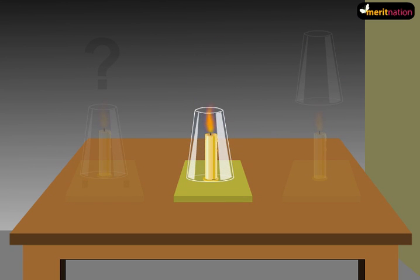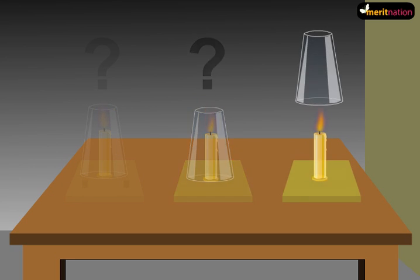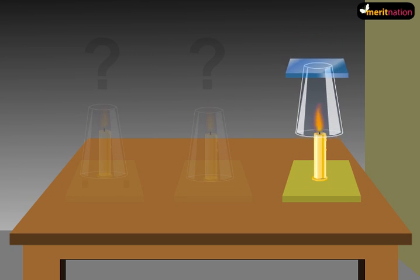Place the glass over the second candle in such a manner that it simply rests on the table. And place a glass plate over the third candle. There you go.